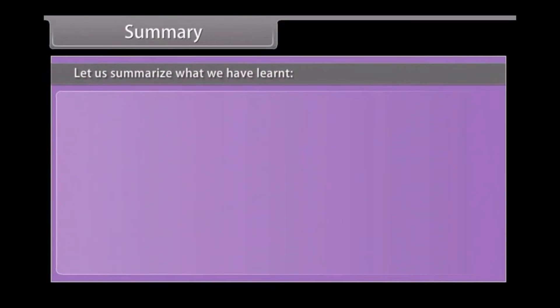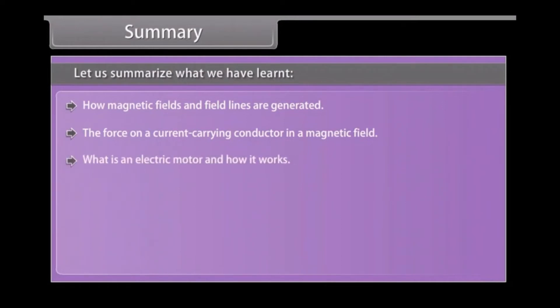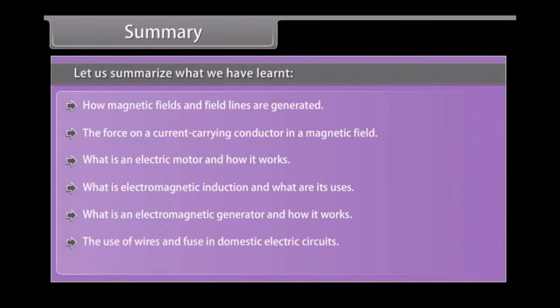Summary. Let us summarize what we have learned. How magnetic field and field lines are generated. The force on a current carrying conductor in a magnetic field. What is an electric motor and how it works. What is electromagnetic induction and what are its uses. What is an electromagnetic generator and how it works. The use of wires and fuse in domestic electric circuits.